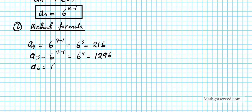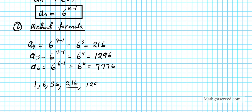A6 equals six to the six minus one, which is six to the fifth power, giving seven thousand seven hundred seventy-six. So the next three terms after one, six, thirty-six are: two hundred sixteen, one thousand two hundred ninety-six, and seven thousand seven hundred seventy-six. Notice all the signs are the same — if the common ratio were negative, the signs would alternate.